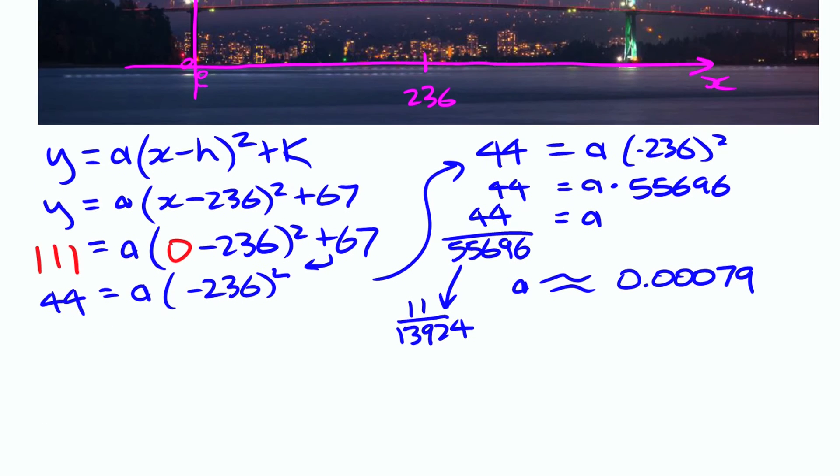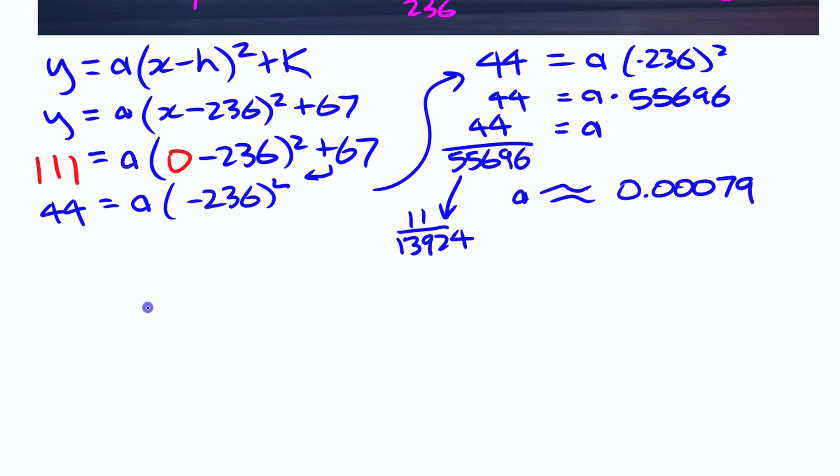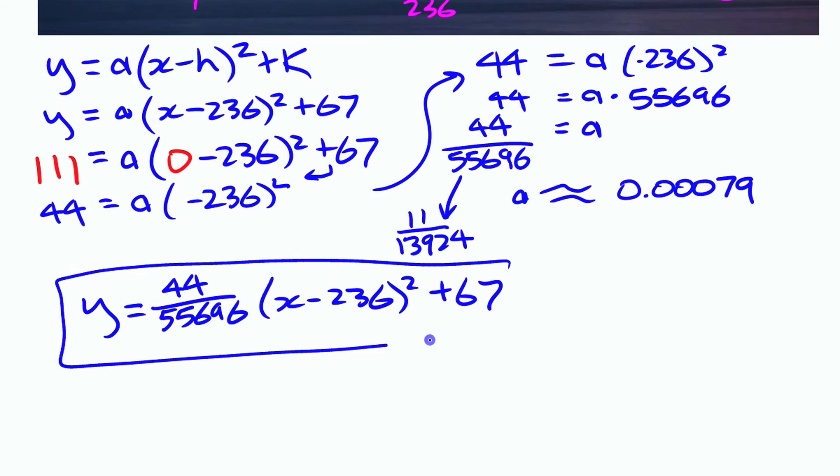All right, so that means your function that you have to represent this with is y equals—let's write the original fraction—44/55,696 times (x - 236)² plus 67. That function represents the shape of those cables if you choose the origin to be at the base of one of the towers.